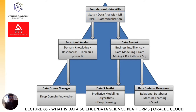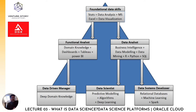We would be discussing about the pyramid. There are two career pathways if you want to be a data scientist — you can be a data systems developer or a data scientist straightforwardly. If you are following the career path from a computer science point of view, you should first have some foundational data skills, which includes stats, data analysis, MS Excel, and data visualization. Further on, you can become a functional analyst or a data analyst. For a functional analyst, you should have domain knowledge and focus on dashboards, Tableau, Power BI, etc. If you want to be a data-driven manager, deep domain knowledge is specifically required.